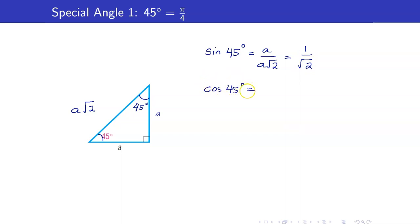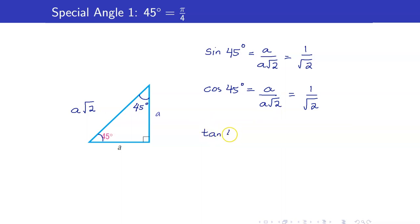Similarly, cosine of 45 degrees is adjacent over hypotenuse, so it's also equal to A over A square root of 2, giving us 1 over square root of 2. I will just use 1 over square root of 2 and will not rationalize it. Tangent of 45 degrees is opposite over adjacent. Since these two sides are the same, tangent 45 is equal to A over A, so that's equal to 1.